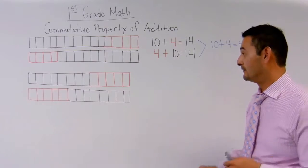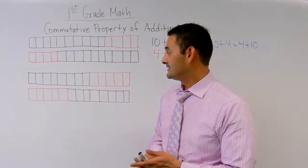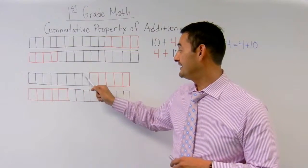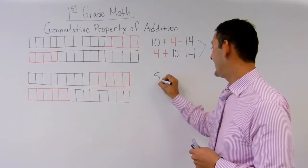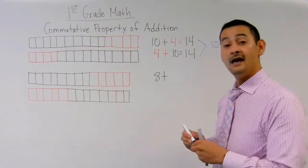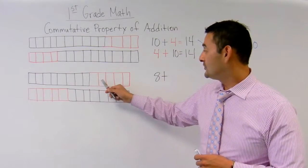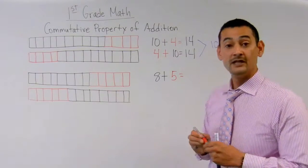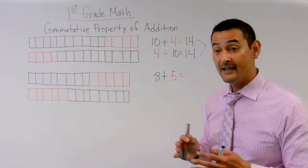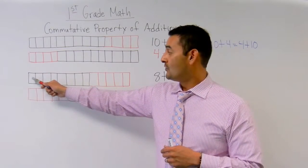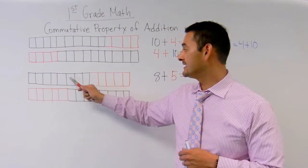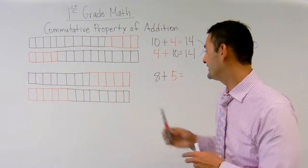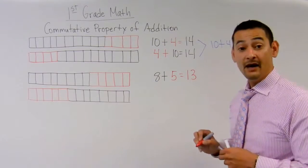Now let's go ahead and take a look at the next problem. Let's count the black boxes together: one, two, three, four, five, six, seven, eight. We have eight black boxes. Plus — how many red boxes do I have? One, two, three, four, five. I've got five red boxes. Equals — how many do I have all together? One through thirteen — I've got thirteen boxes.